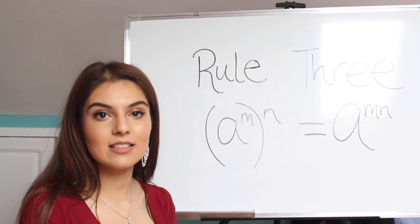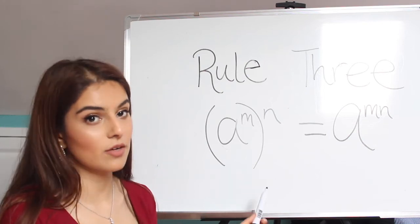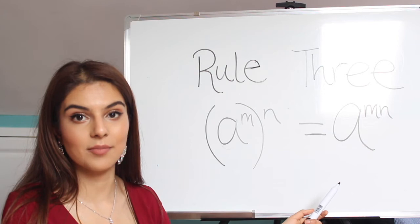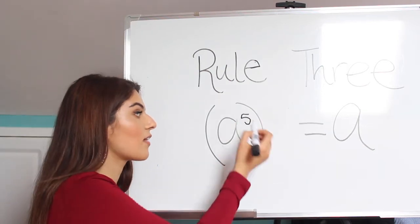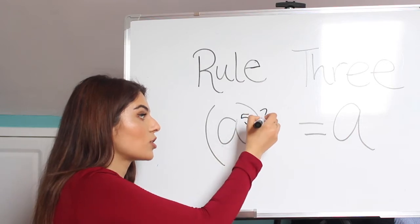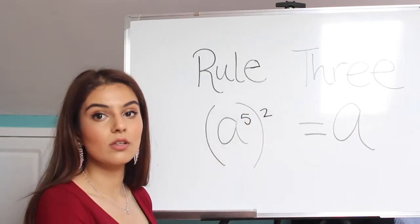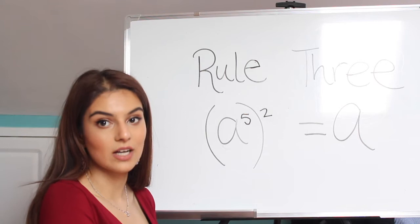If we see an indices in brackets with a power outside, you just times the two powers together. So for example, if we had a to the power of 5, and then outside it was to the power of 2, it would just equal a to the power of 10, which is 5 times 2.